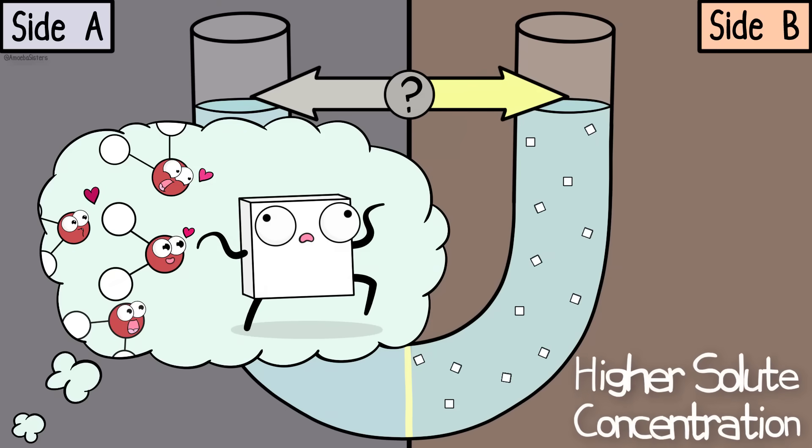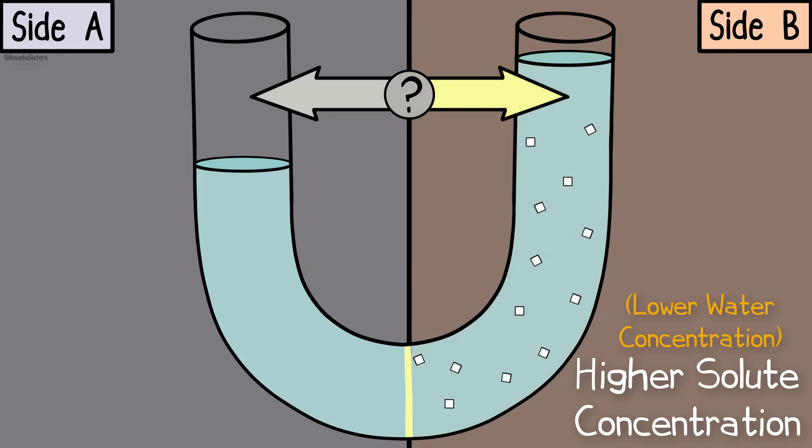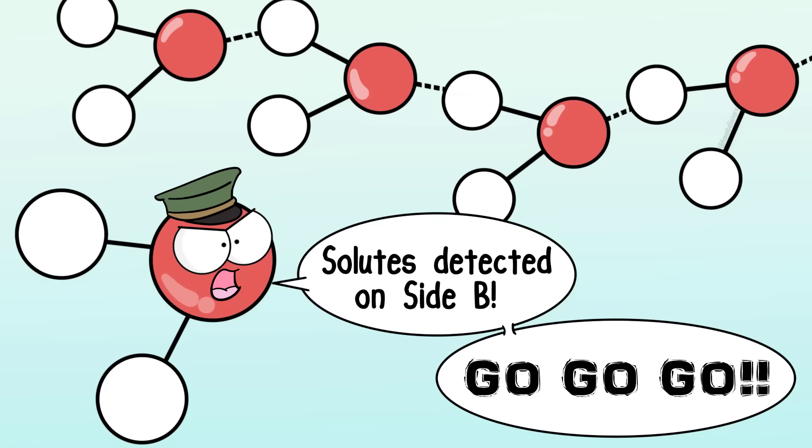Side B has a higher solute concentration than side A. Water moves to areas of higher solute concentration, which is also the area of lower water concentration. You will also see the water level on side B rise as the water moves to that area. You can almost think of the water as trying to equalize the concentrations, diluting side B.